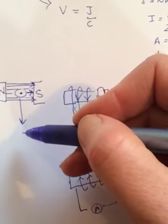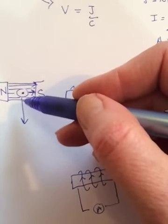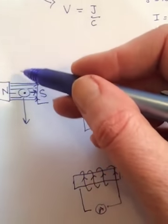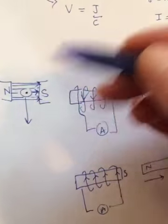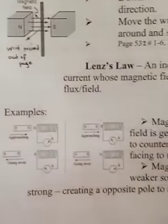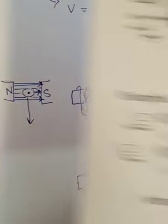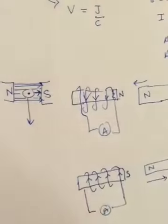When it goes down, when we move it down here, the field gets weaker so it flows in a direction to try to make the field stronger. As we move it up, it's now getting stronger again and flows in such a way to try to prevent that. So it always flows in such a way to reduce the change in field.